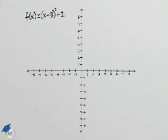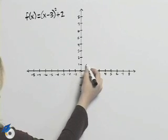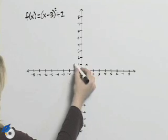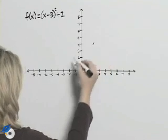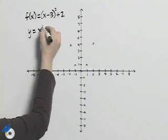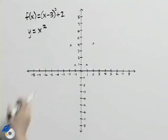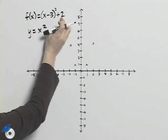We know that the graph for y = x² goes through the following points. Now y = x² is related to this in that this graph has been shifted 3 units to the right and 2 units up.